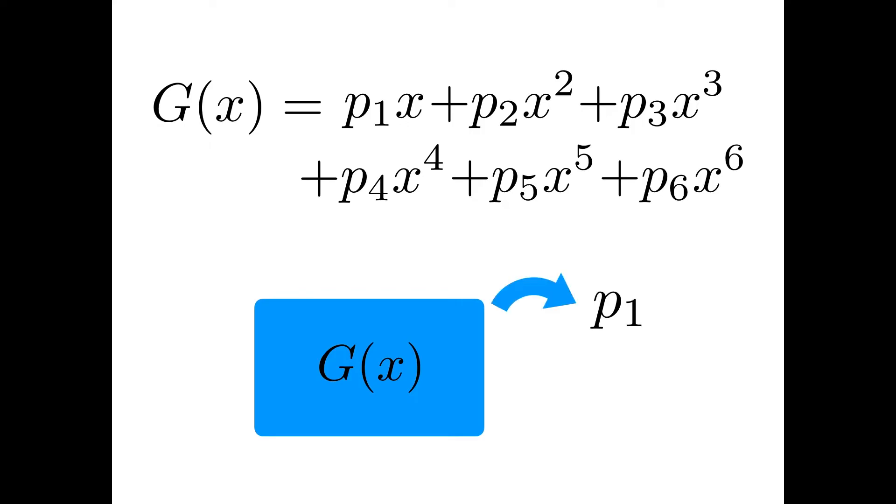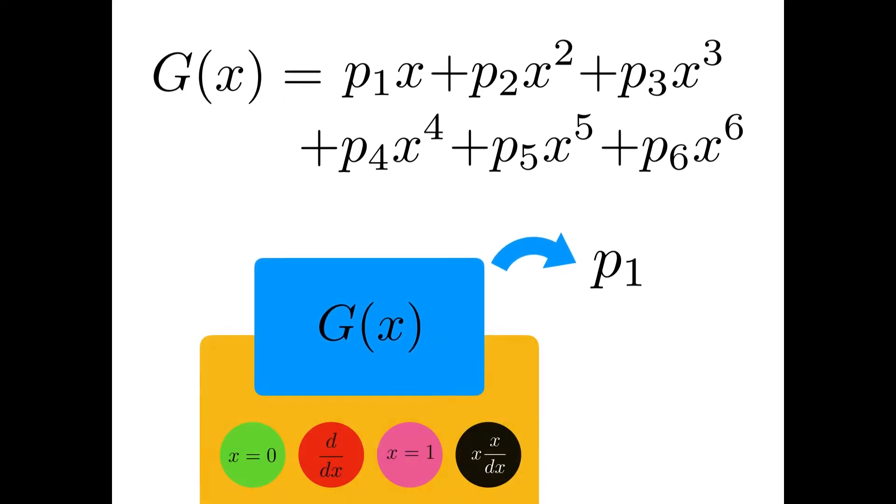So can this function spit out or generate the probability values back to us? Let's think about it. Let's first focus on p1 which seems easiest. So how can you get back p1 from this function? Consider this function as a machine with a bunch of buttons you can press. And each button corresponds to some mathematical operations.